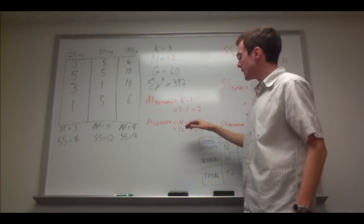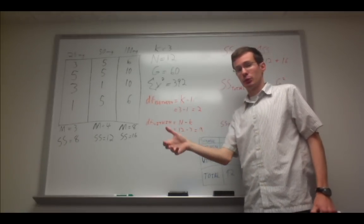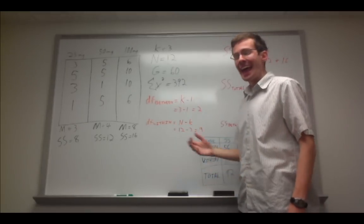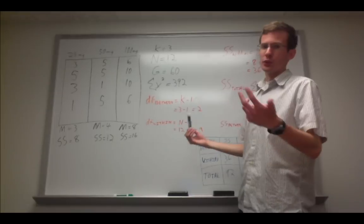The degrees of freedom within is the total number of observations minus the number of groups, or represented symbolically, N minus K. In this case, 12 minus 3, which equals 9.